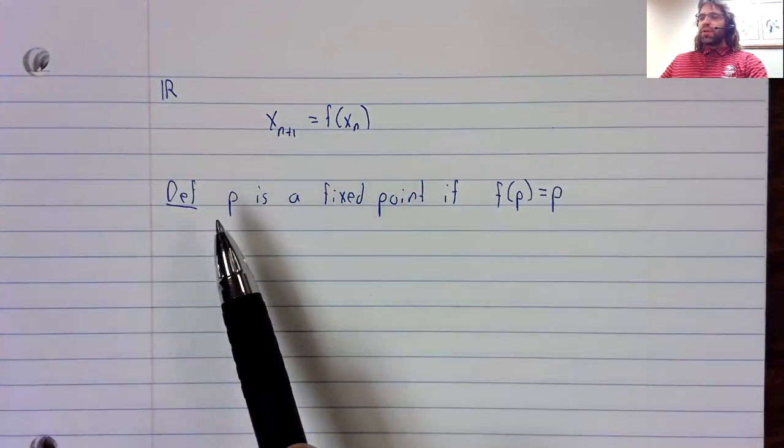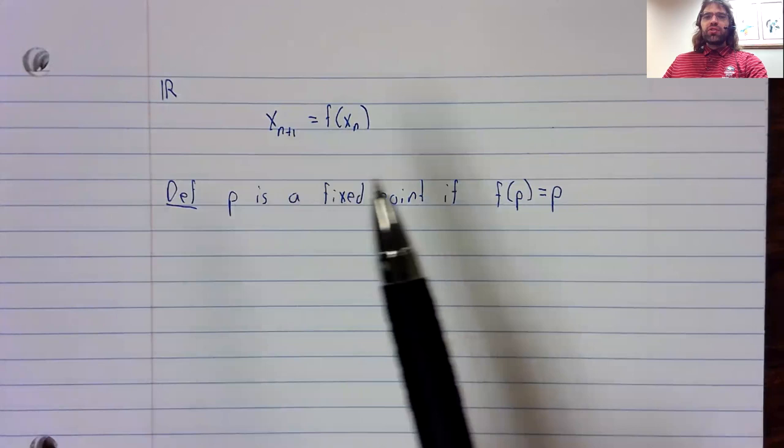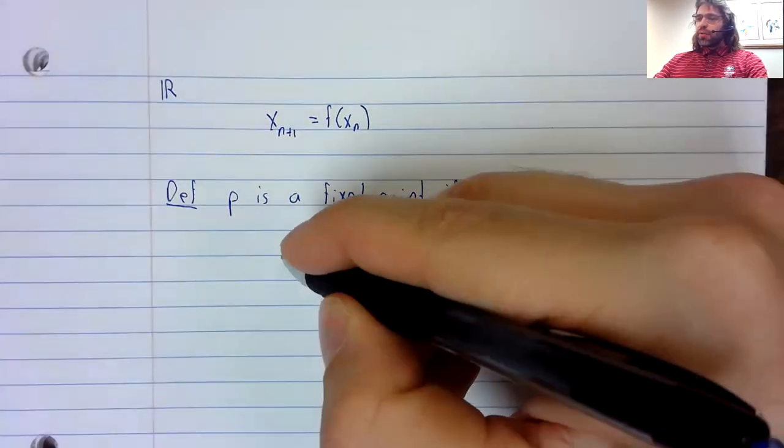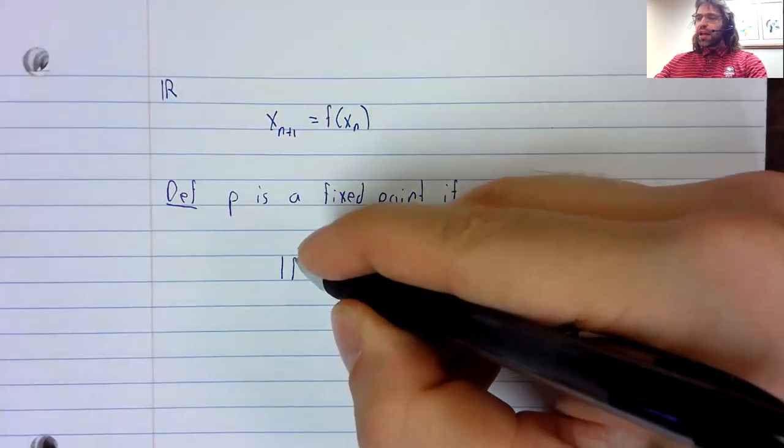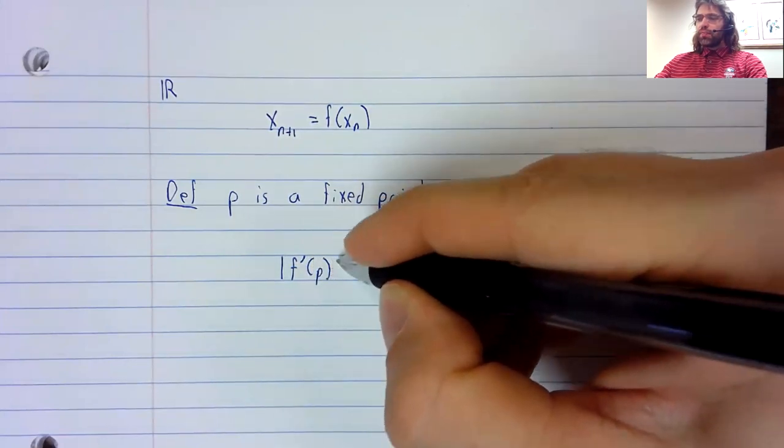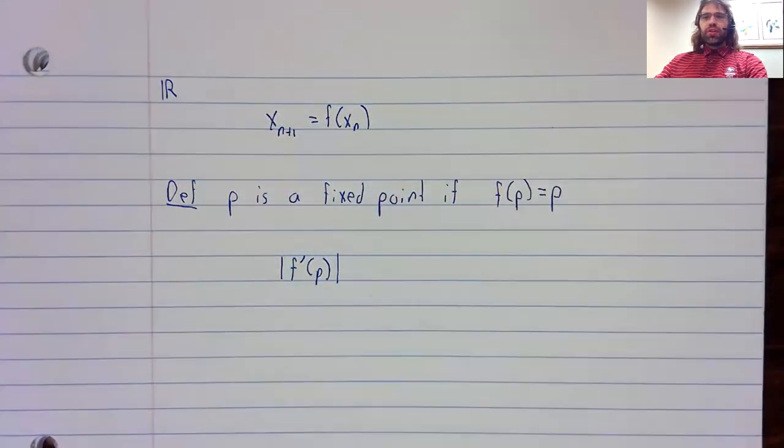To study the stability of a fixed point, we look at the derivative, or more correctly, the absolute value of the derivative.